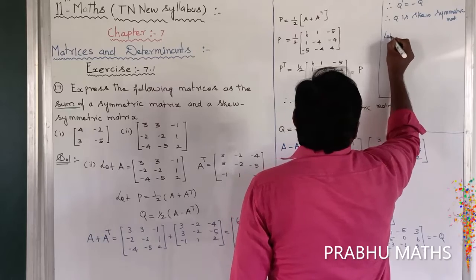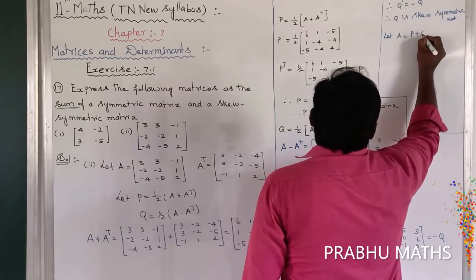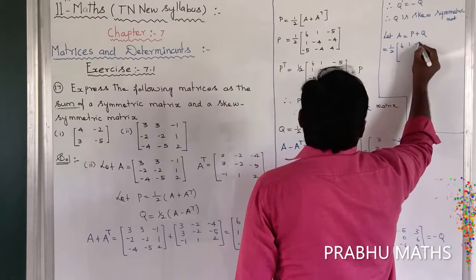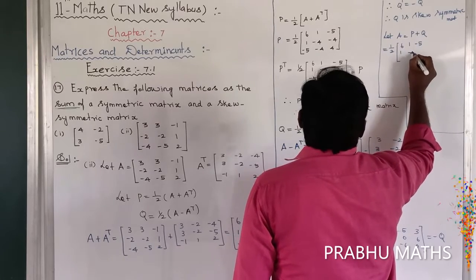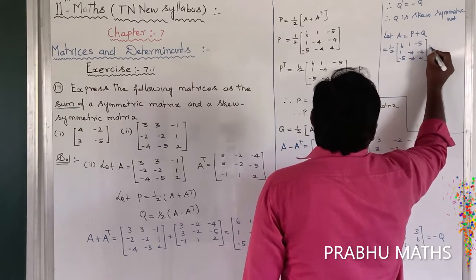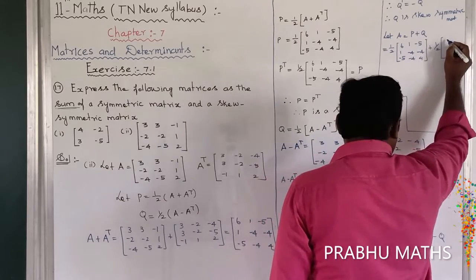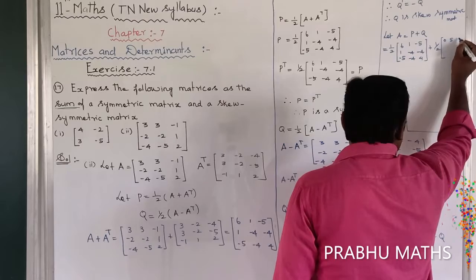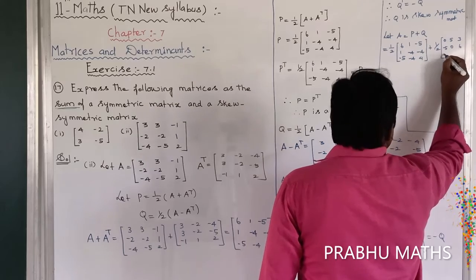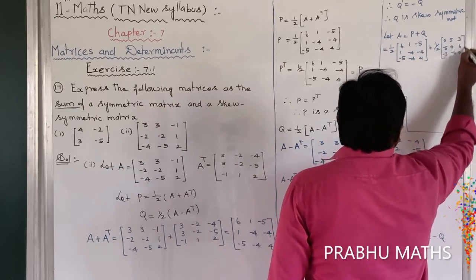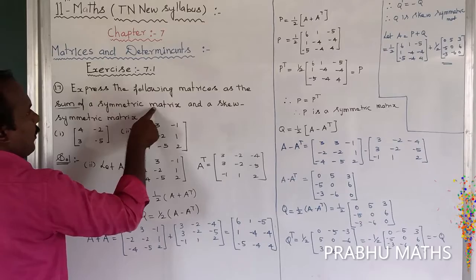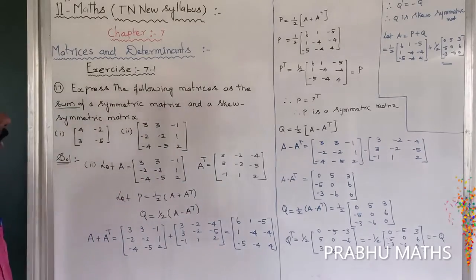Finally, consider A equal to P plus Q. P value is 1 by 2 into the matrix with rows 6, 1, minus 5; then 1, minus 4, minus 4; then minus 5, minus 4, 4. Plus Q value which is 1 by 2 into rows 0, 5, 3; then minus 5, 0, 6; then minus 3, minus 6, 0. This confirms A as the sum of a symmetric matrix P and a skew-symmetric matrix Q, completing the second subdivision.